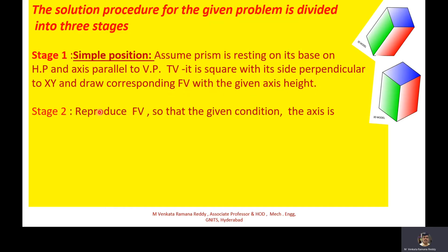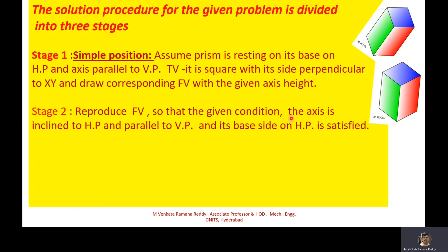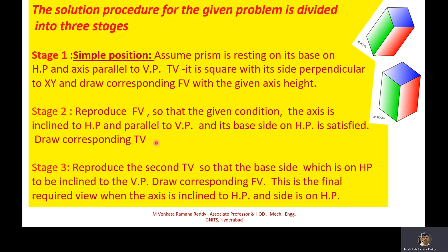Then we move to stage 2, where we reproduce the front view so that the condition — axis inclined to HP, parallel to VP, and base side on HP — is satisfied, and draw the corresponding top view. After that, in stage 3, we reproduce the second top view so that the base side on HP is inclined to VP, then draw the corresponding front view. This final front view satisfies all given conditions when the axis is inclined to HP and the side is on HP.